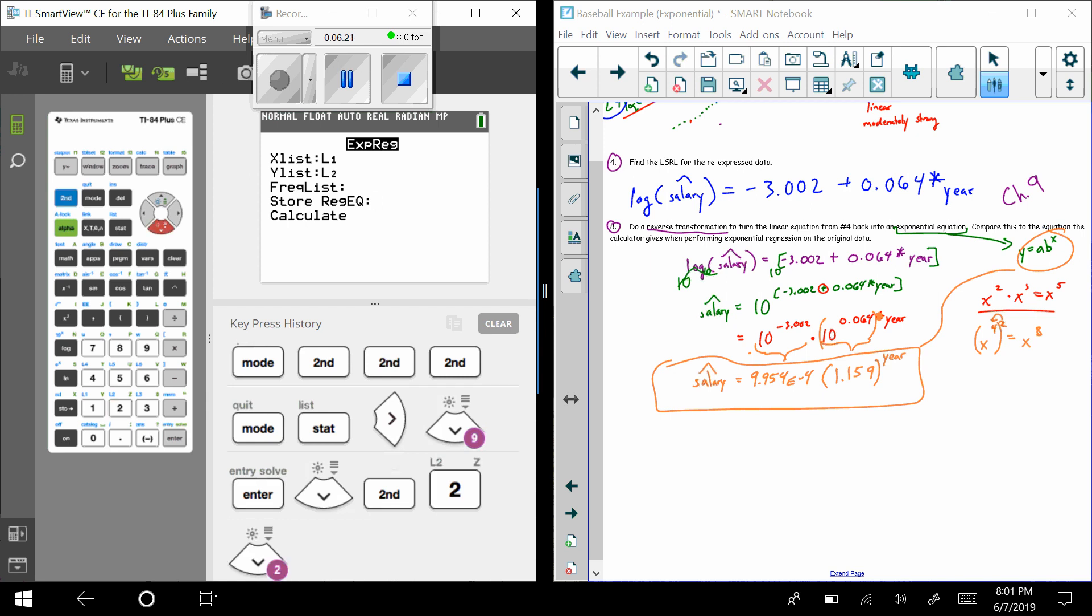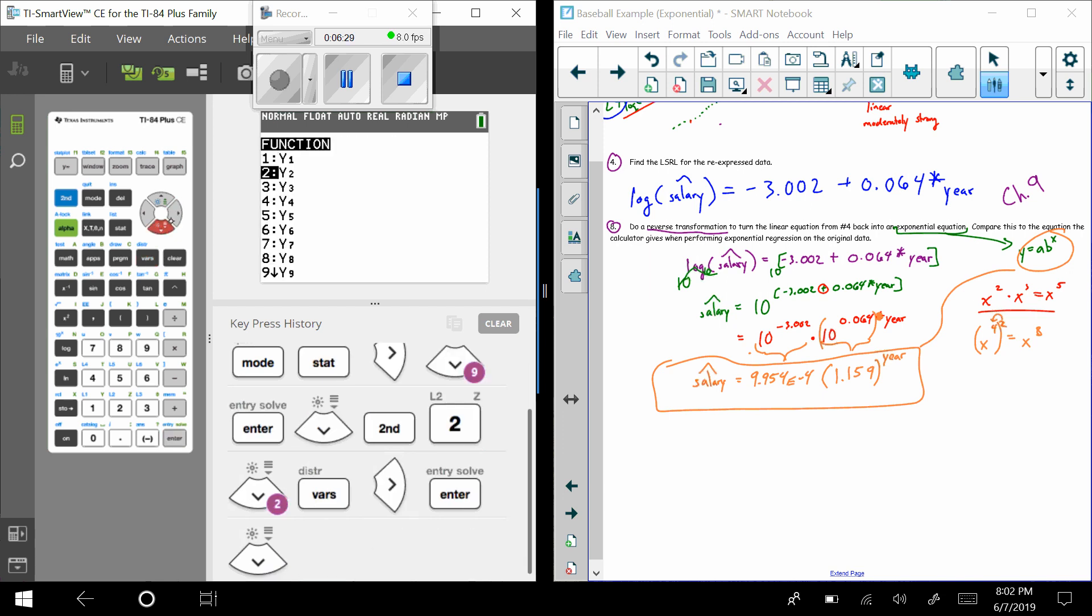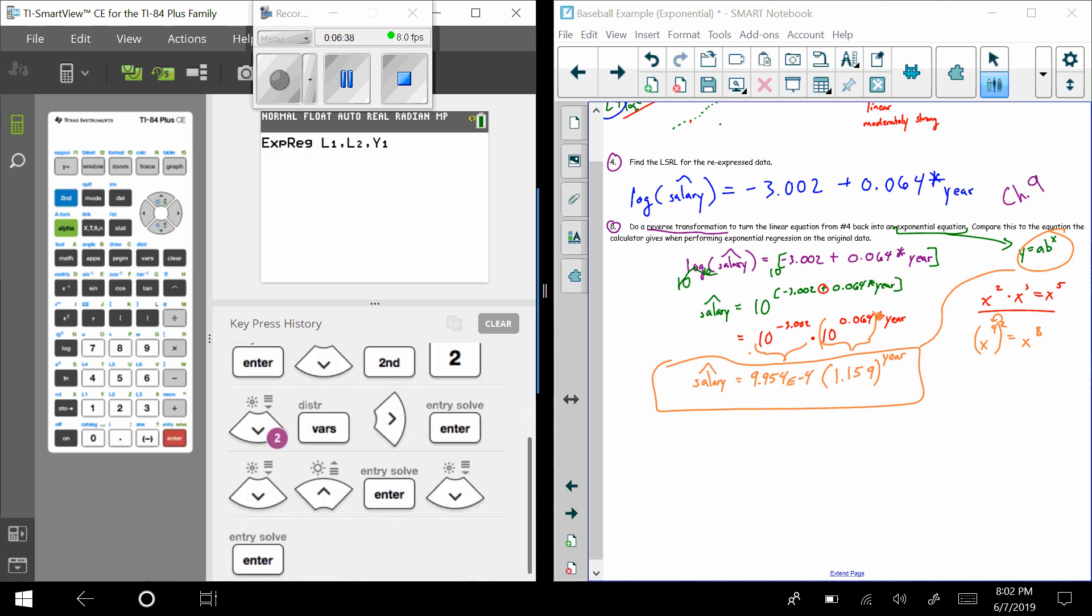And we can store it if we want. Let's store it as Vars, Y-Vars. Let's not put it in Y1... Well we've always kind of put stuff in Y1. Let's put it there anyway. And run it. And look at this: we get 9.9532.